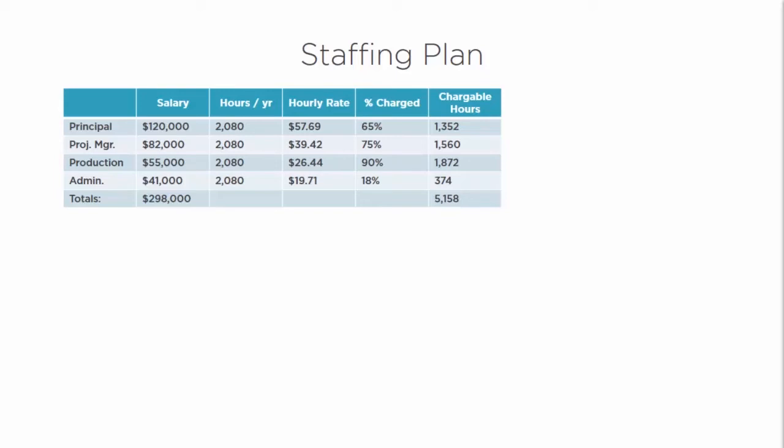These figures get filtered through a formula based on 2,080 hours per year. Your hourly rate is simply the salary divided by the number of hours per year, which gives you the hourly rate.